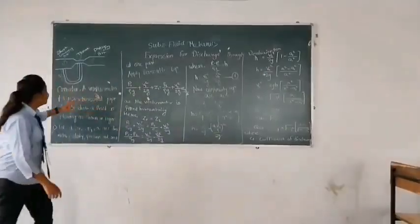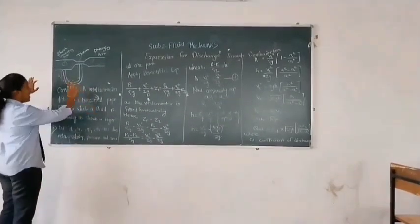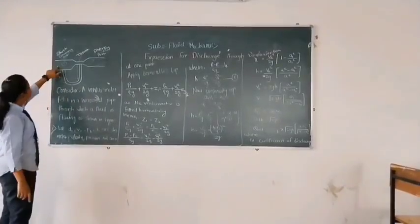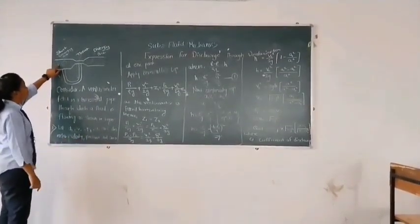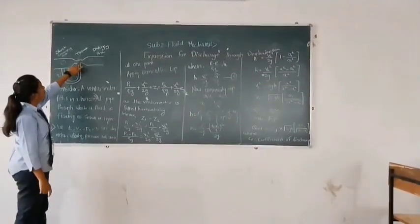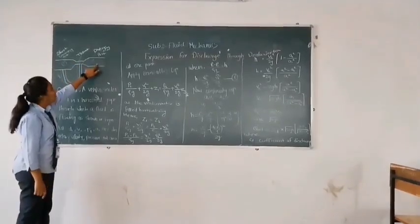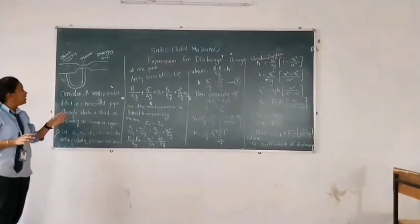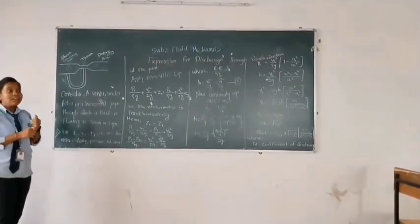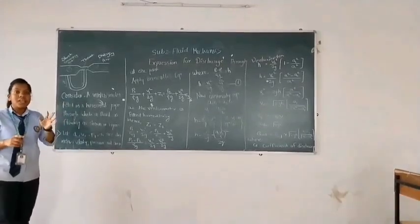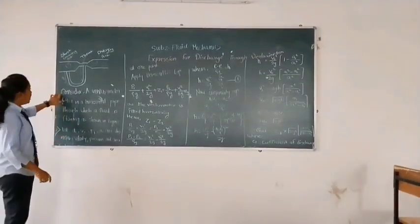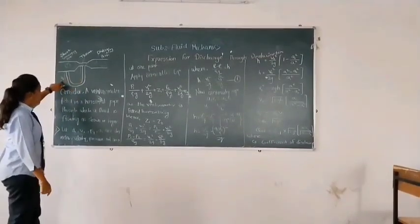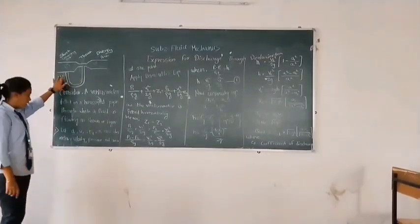So here first we discuss the diagram. This is the diagram of venturi meter which is placed in the horizontal direction. The first section we call the short converging part, second section we call the throat, and third section we call the diverging part. In this expression we have to find the height as well as the coefficient of discharge. We consider a venturi meter fitted in a horizontal pipe through which a fluid is flowing as shown in the figure.